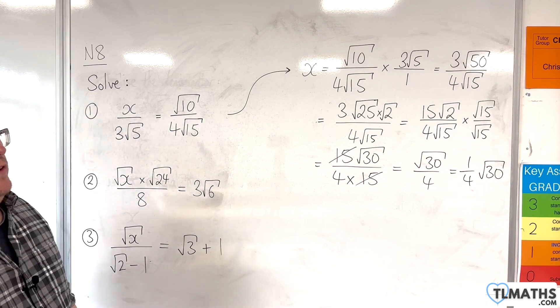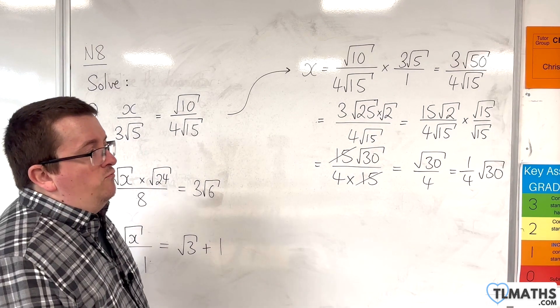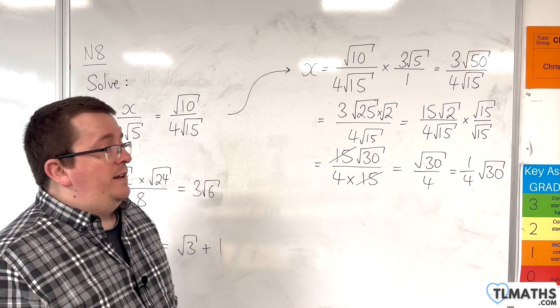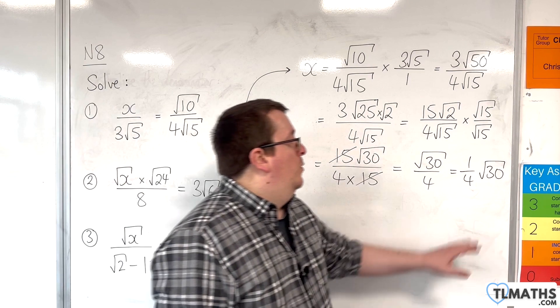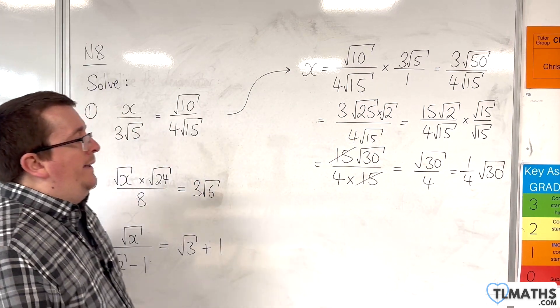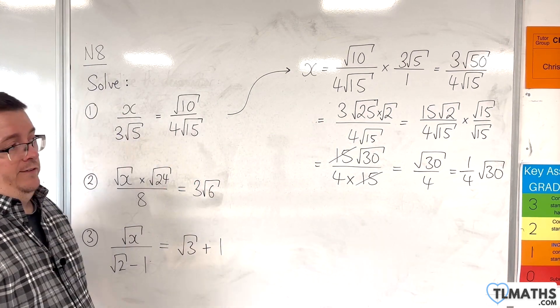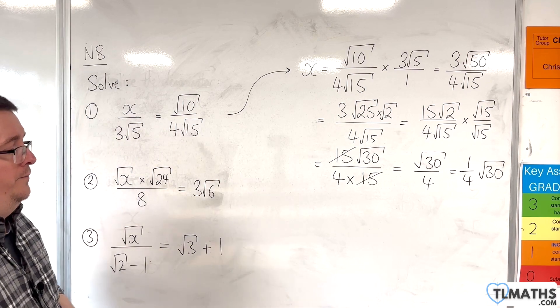√30 cannot be simplified any further, so one-quarter √30 is my answer to number 1.